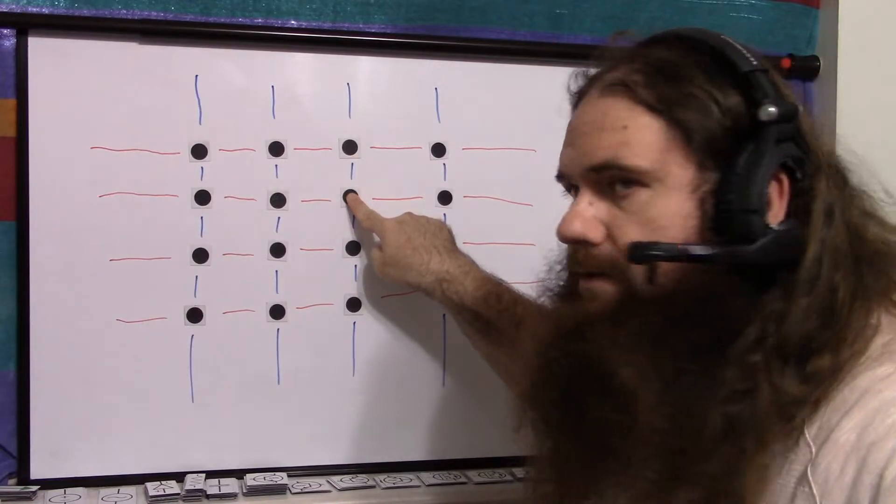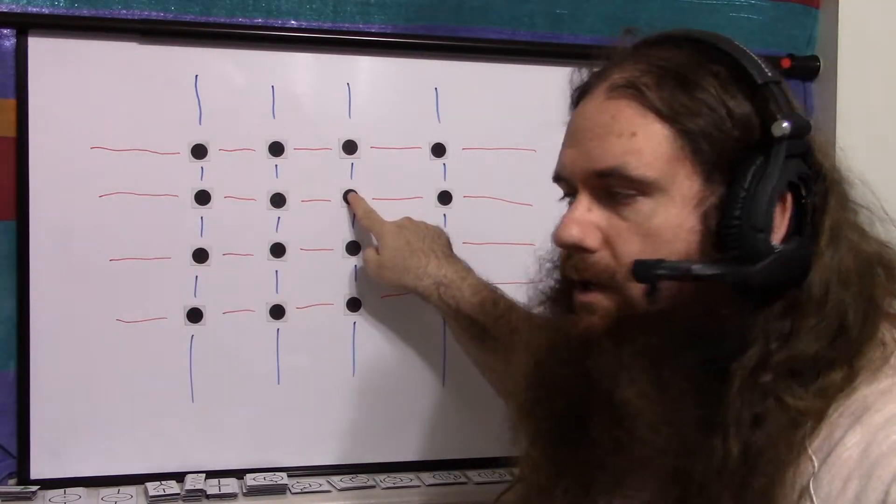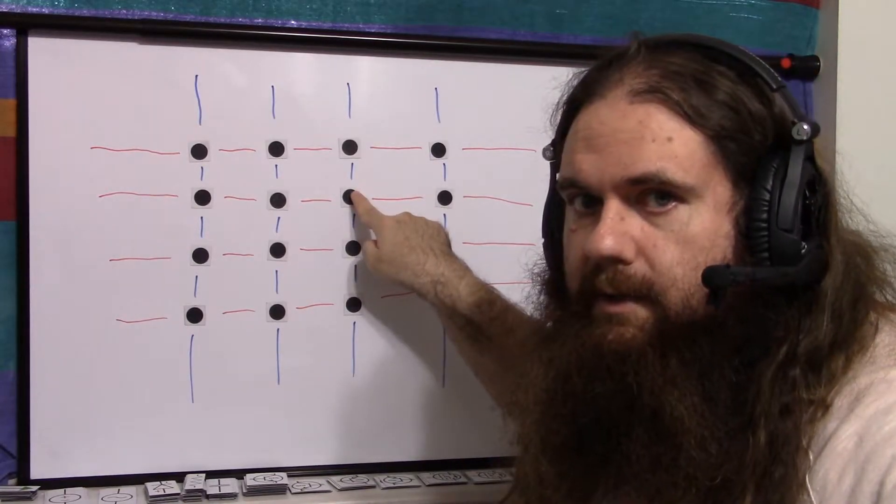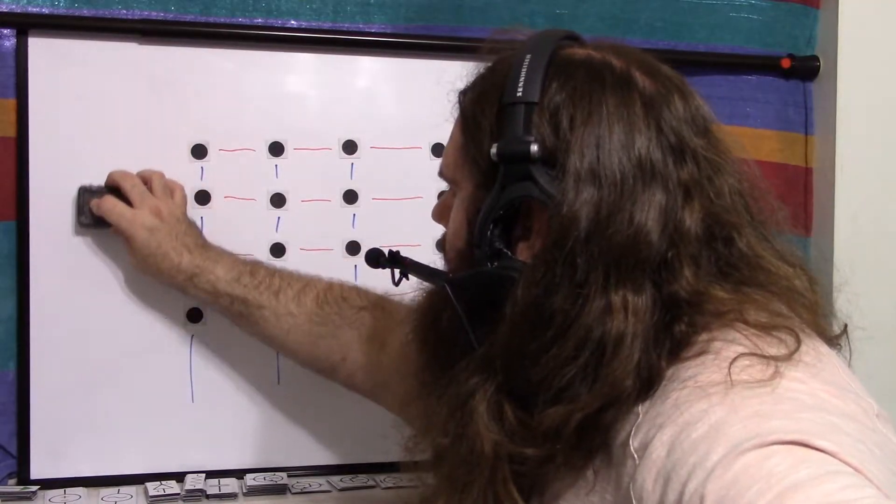But let's say you press this button here. This horizontal wire, we'll think of it as a row, and this vertical wire, think of it as a column, are both connected.